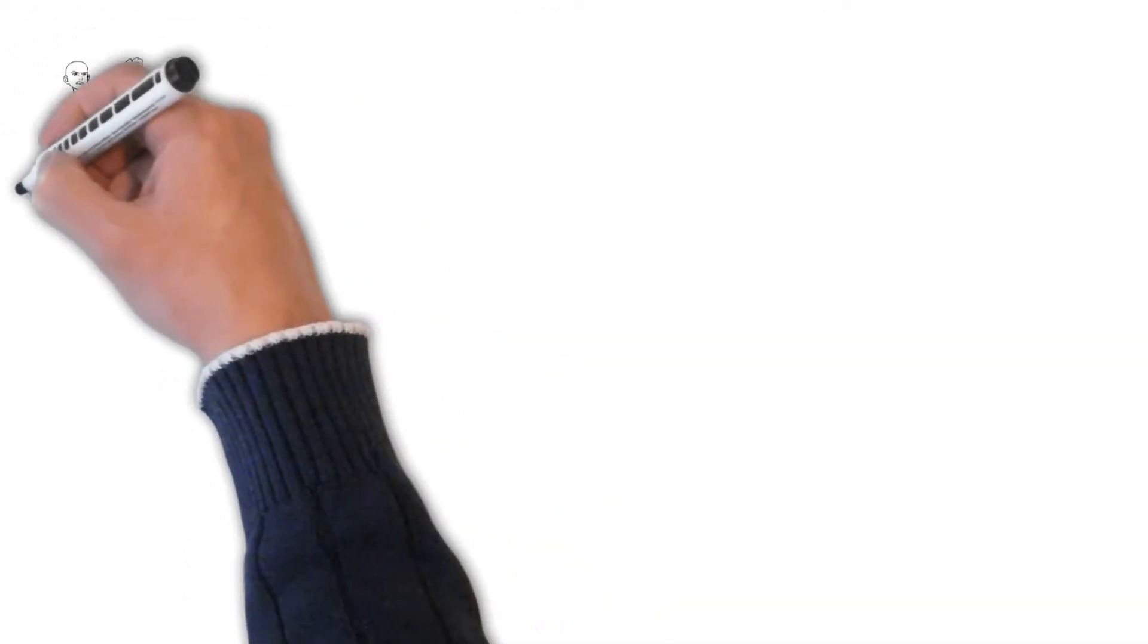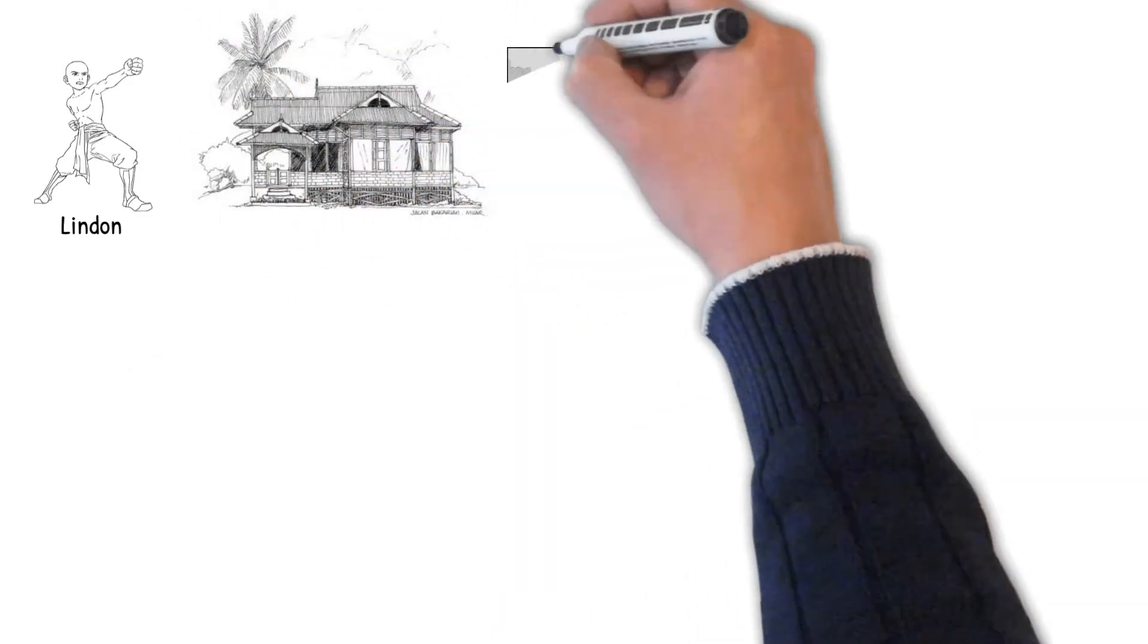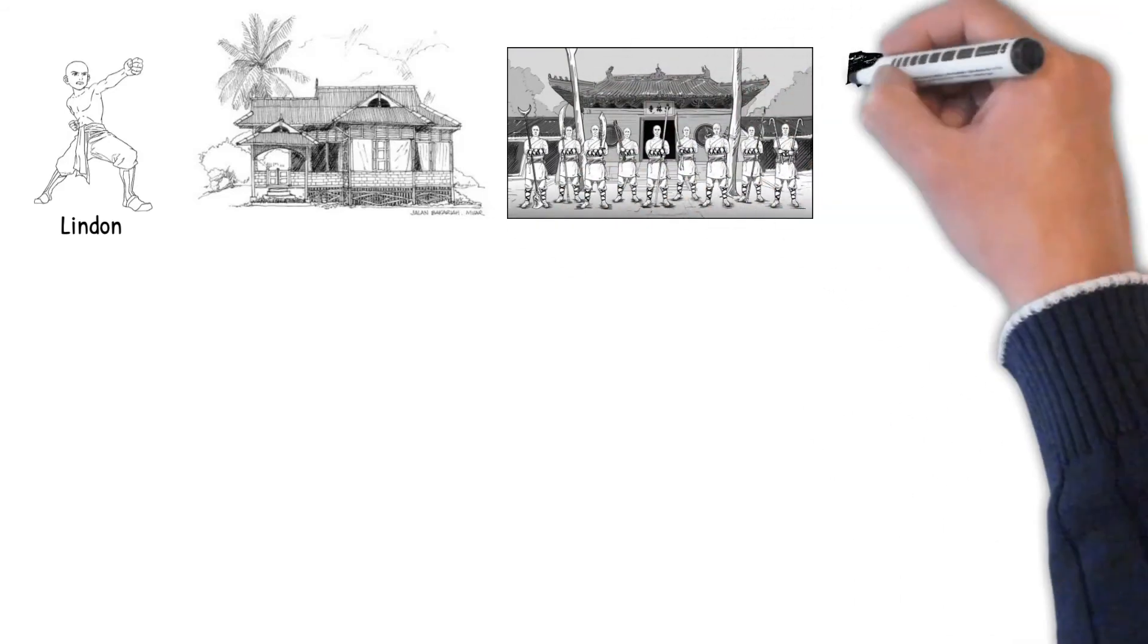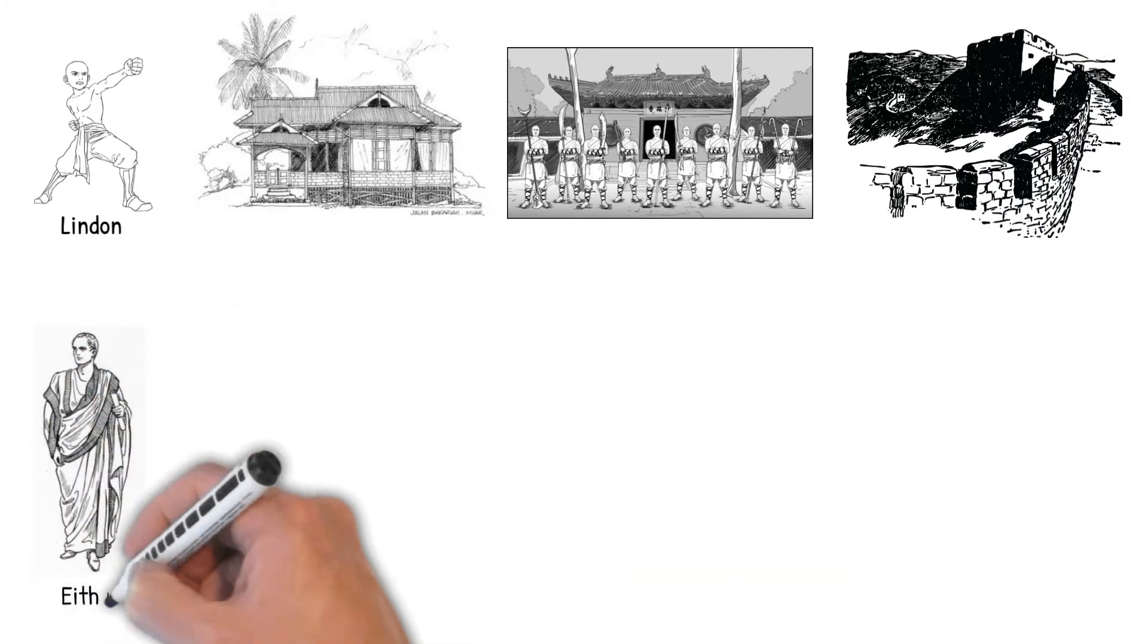Linden, the protagonist, is the proverbial ugly duckling. This series follows his journey from his village, where he is shunned for being different, to the monastery in the valley and to the lands outside. He catches the eye of Aethan, an enigmatic member of the Aurelius clan.